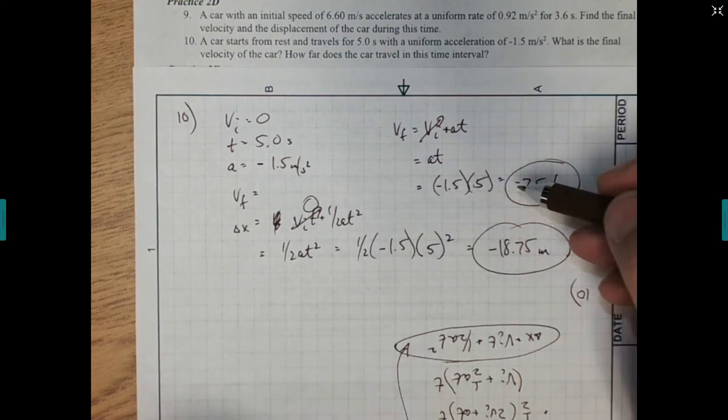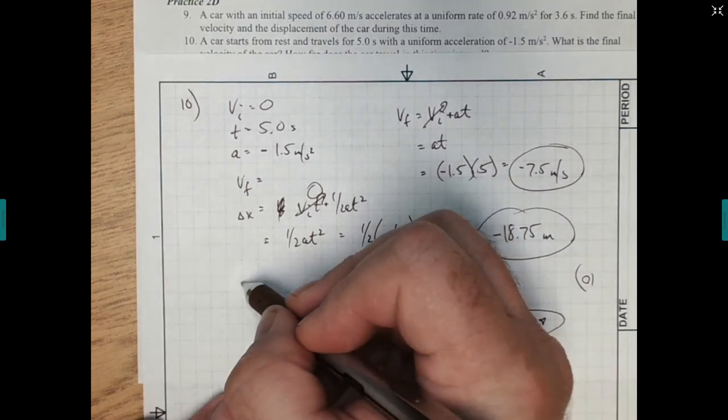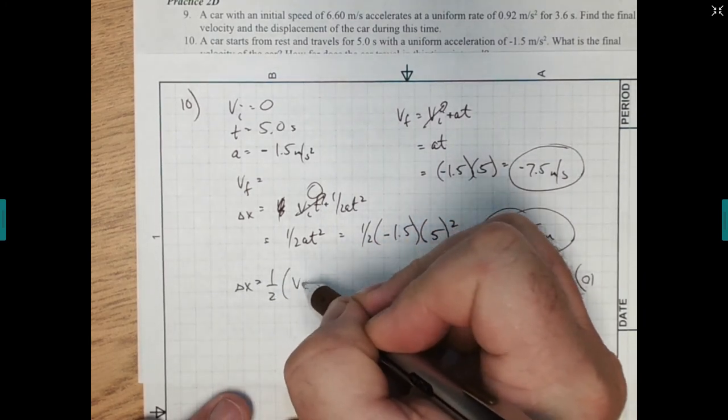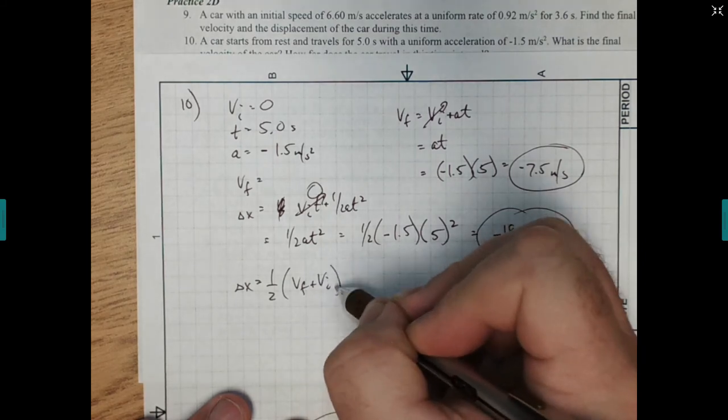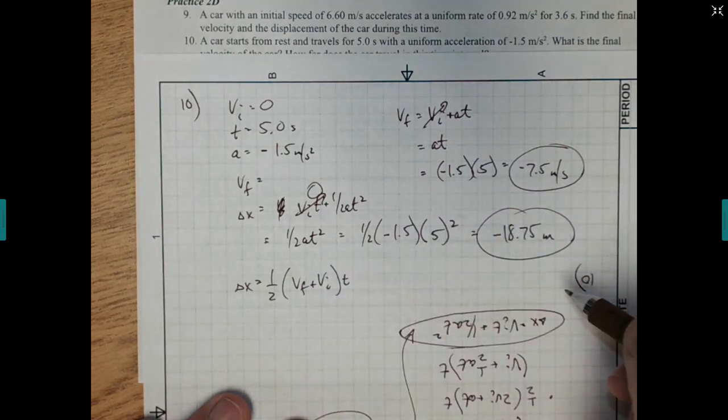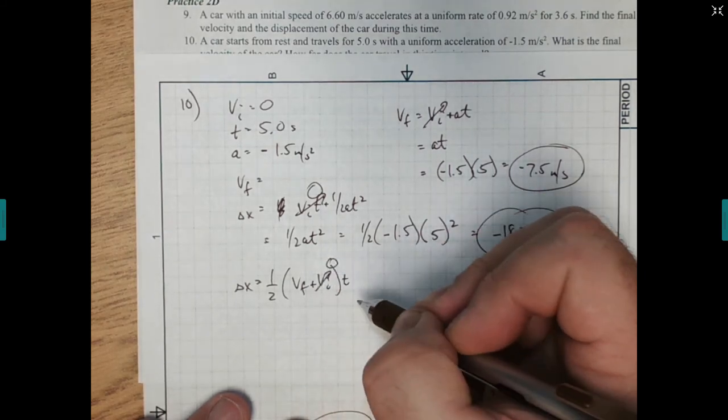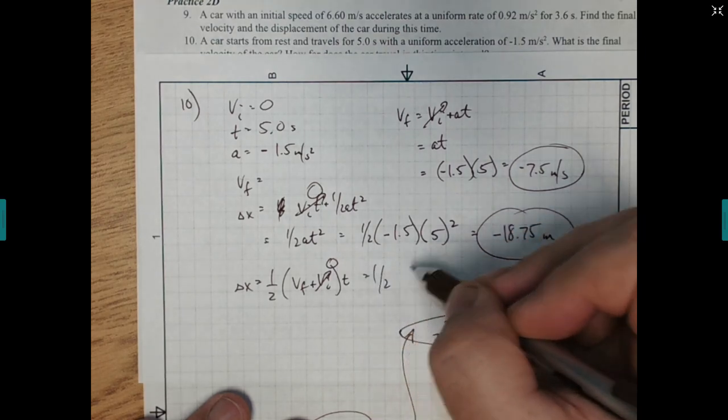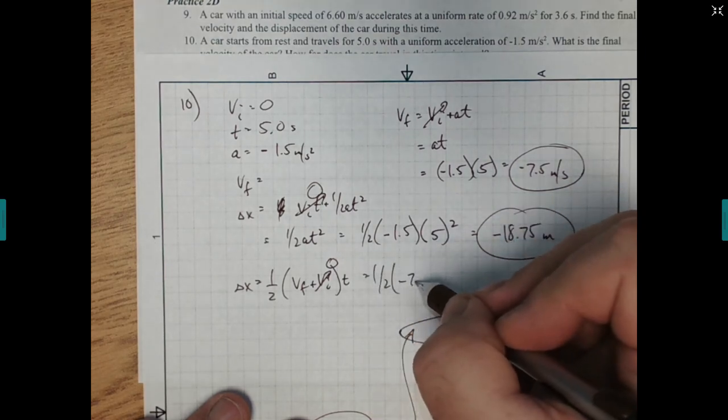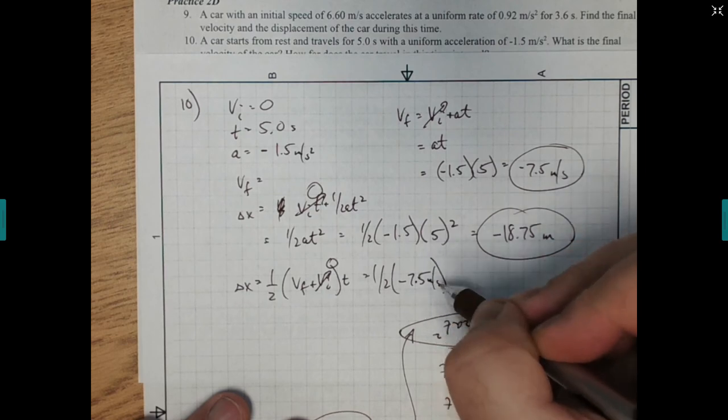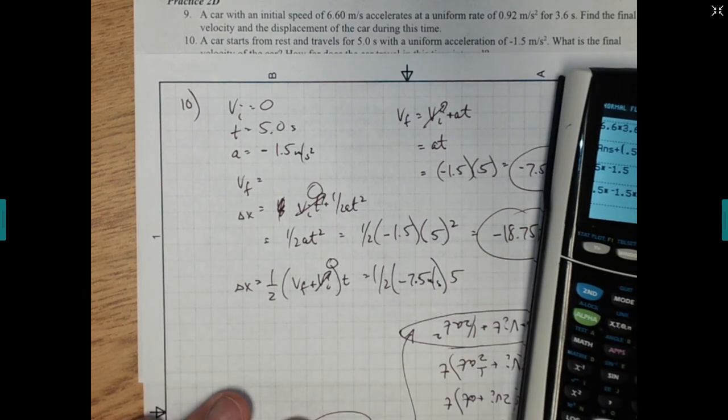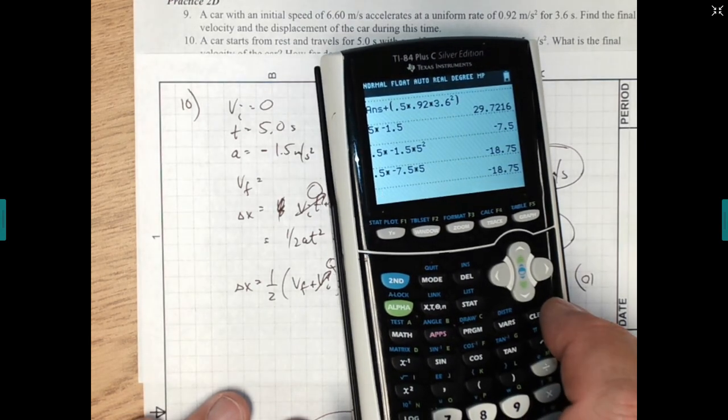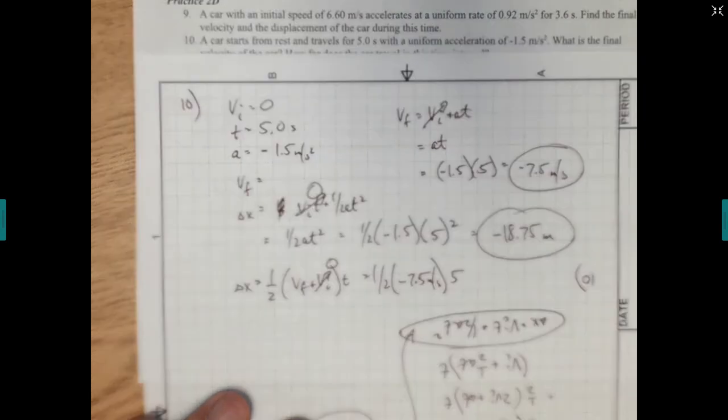Now we could do it the other way. If you want to try it. See if we get the same. I don't mind. I'm willing to do. So it's v f plus vi times t. Right. That was our other delta x. Again, this is 0. So this is just 1 half times the final velocity. Which was negative 7.5 meters per second. Times the time of 5 seconds. Let's see if that works out. So 0.5 times negative 7.5 times 5. And look at that. Didn't matter which way we did it. We got the exact same number.